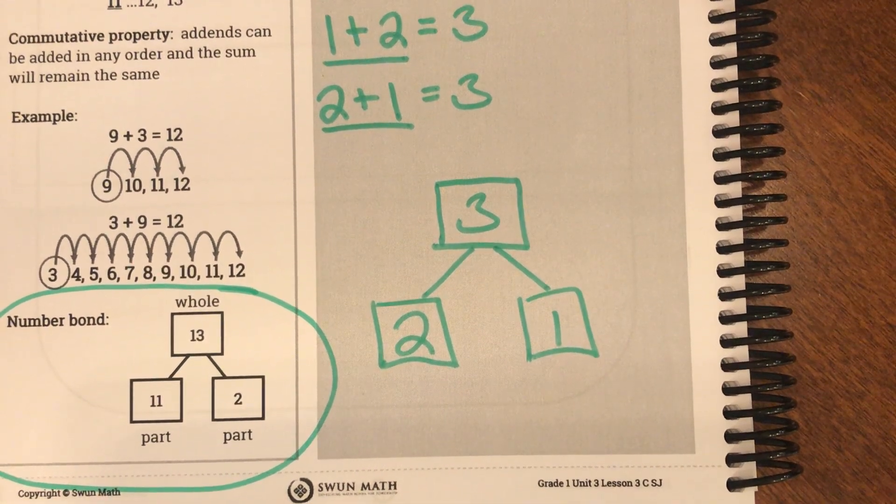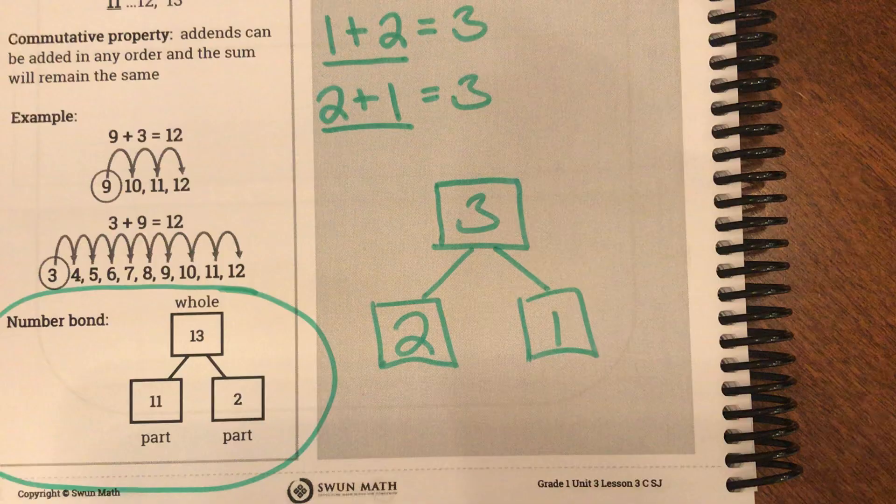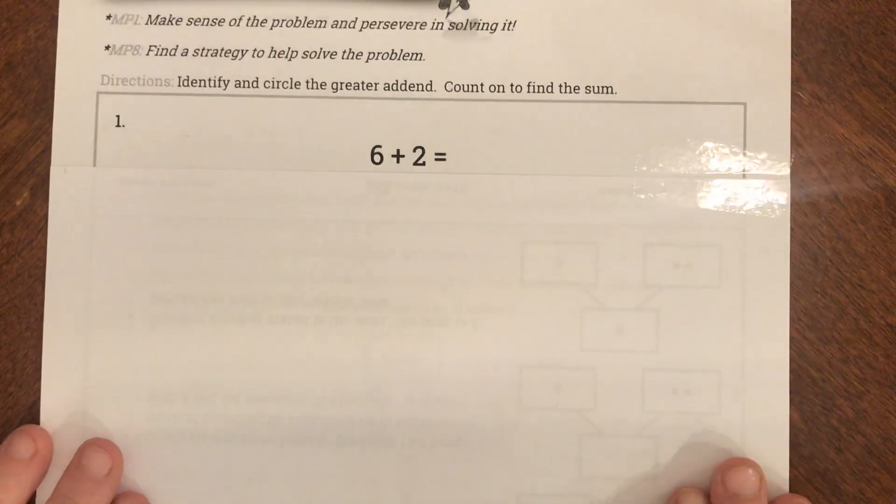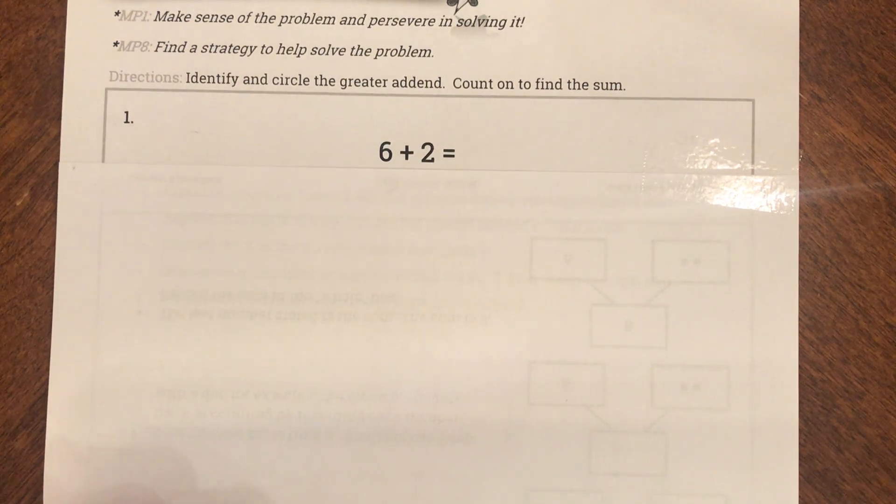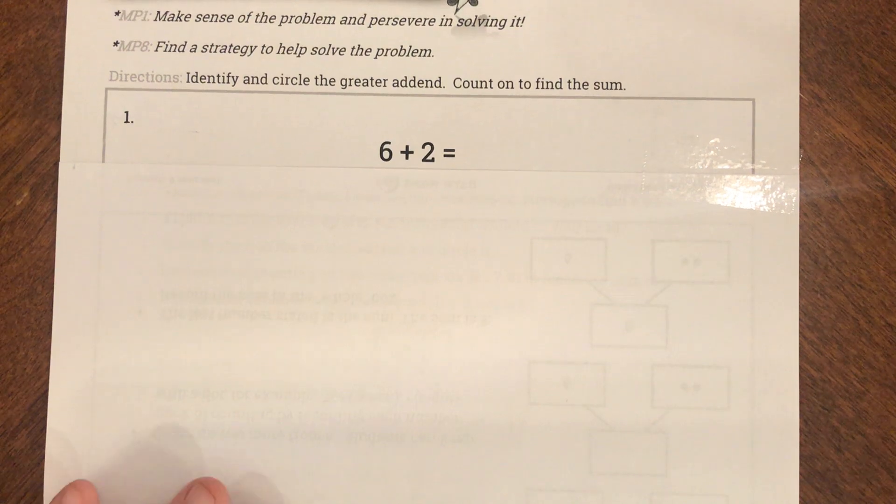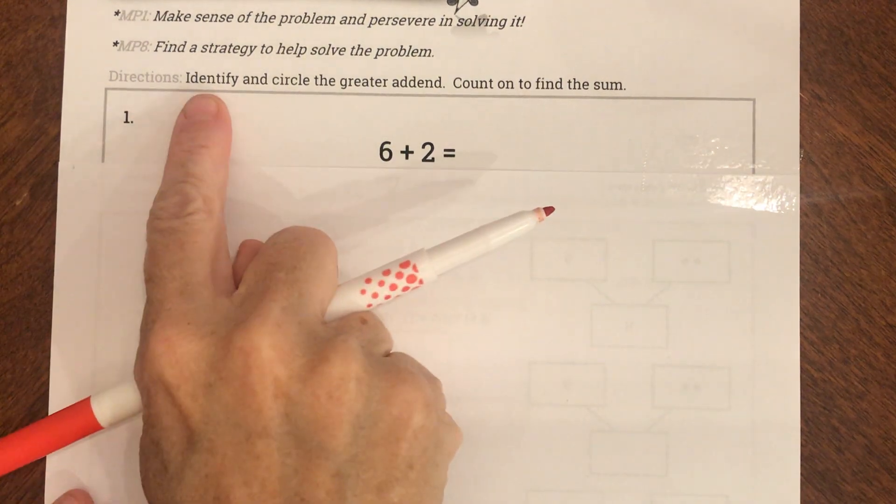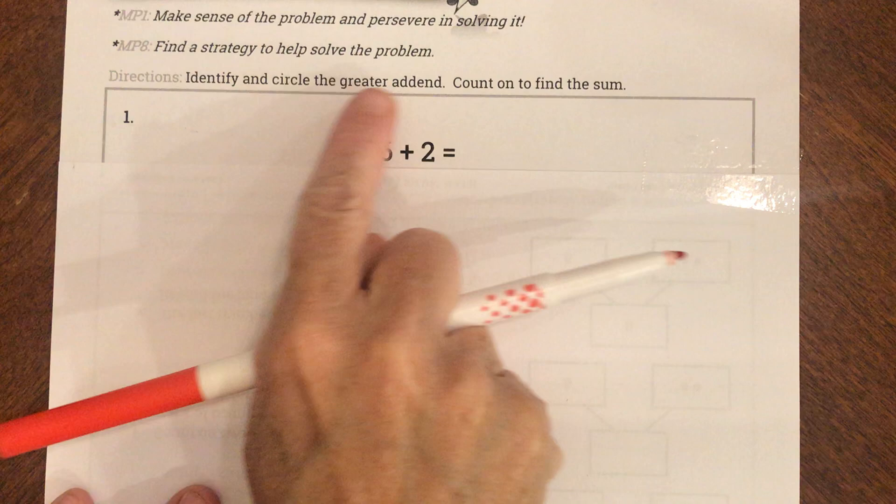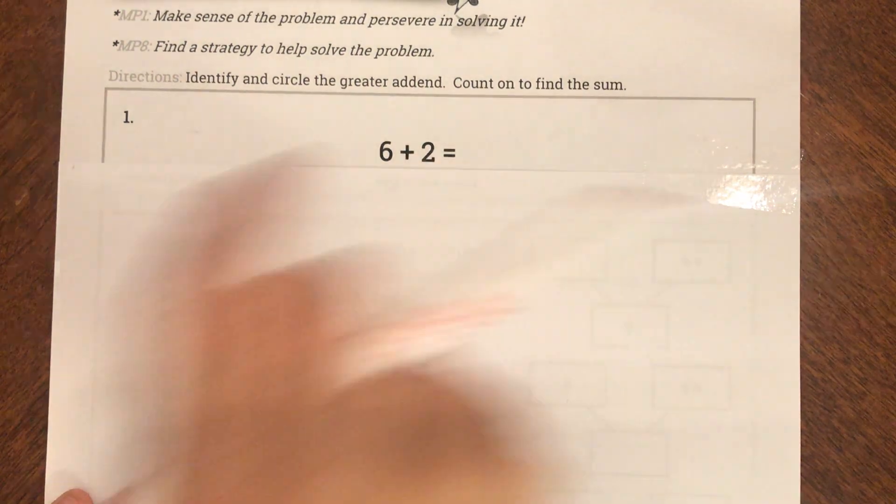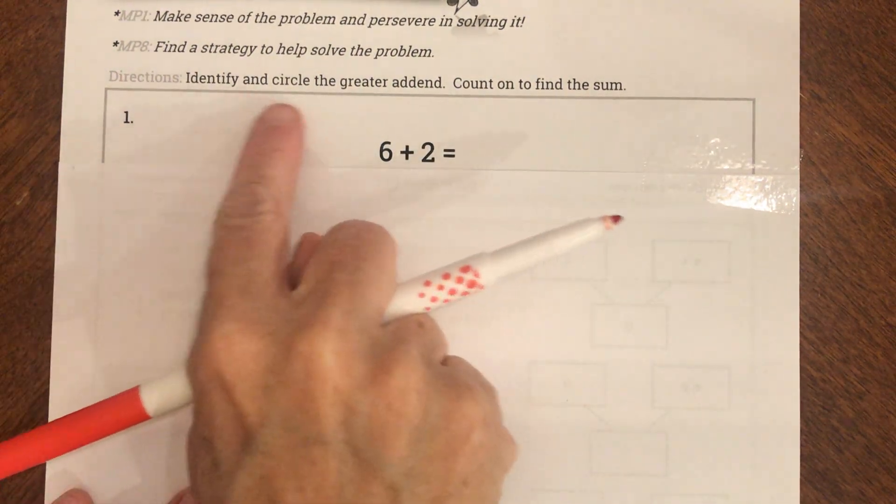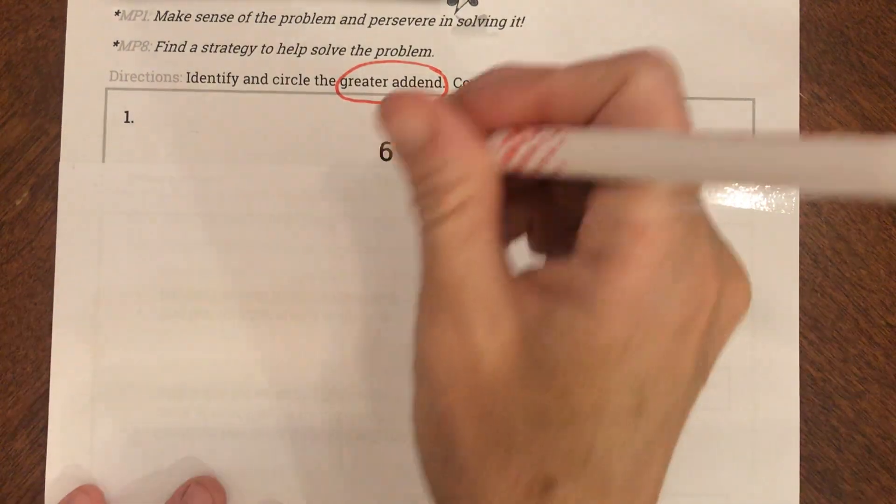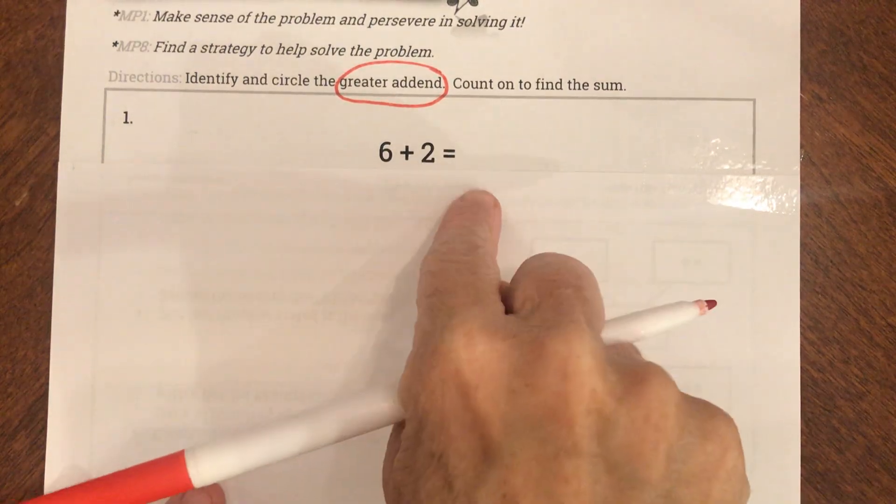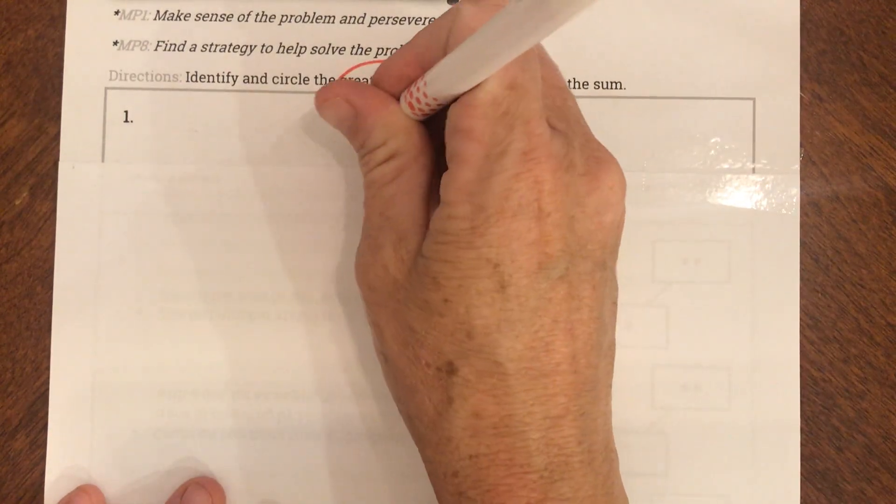So boys and girls we're going to get started. I'm going to show you what this looks like. So I'm going to pick up my red pen if you want to set down your pencil. Here's my first problem. It says 6 plus 2. So my directions say identify and circle the greater addend. Count on to find the sum. So they want me to first circle the greater addend. So what's greater? 6 or 2? 6 is greater.